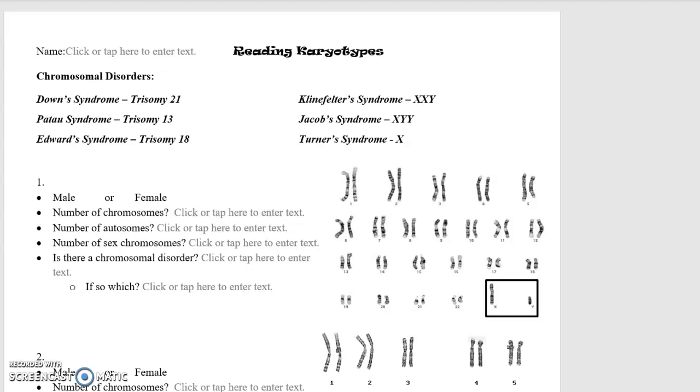Hello ladies and gents. I wanted to do a quick little practice problem with you on this reading karyotypes worksheet. First thing is you'll notice at the top that I listed the different chromosomal disorders for you and where the problem occurs in the karyotype. So these are here to help you distinguish what kind of disorder is going on in your karyotype. So I'm going to do the first one with you so you have some idea on how to do this on your own.